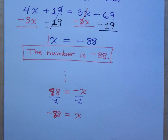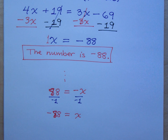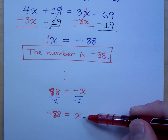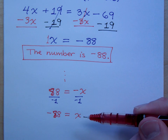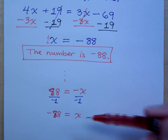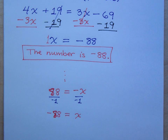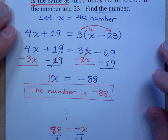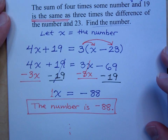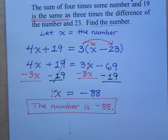The end goal here is to have a plain positive 1x. Had you moved the variables and constants the opposite way, you would have ended up with a negative x — which meant an extra step. This is why it's always best to move your variable terms so that the coefficient is positive. It will save you the step of having to divide by a negative. For some reason, it's more difficult to divide by negative than by positive. But it doesn't really matter — x equals negative 88, the number is negative 88, and we're good to go.